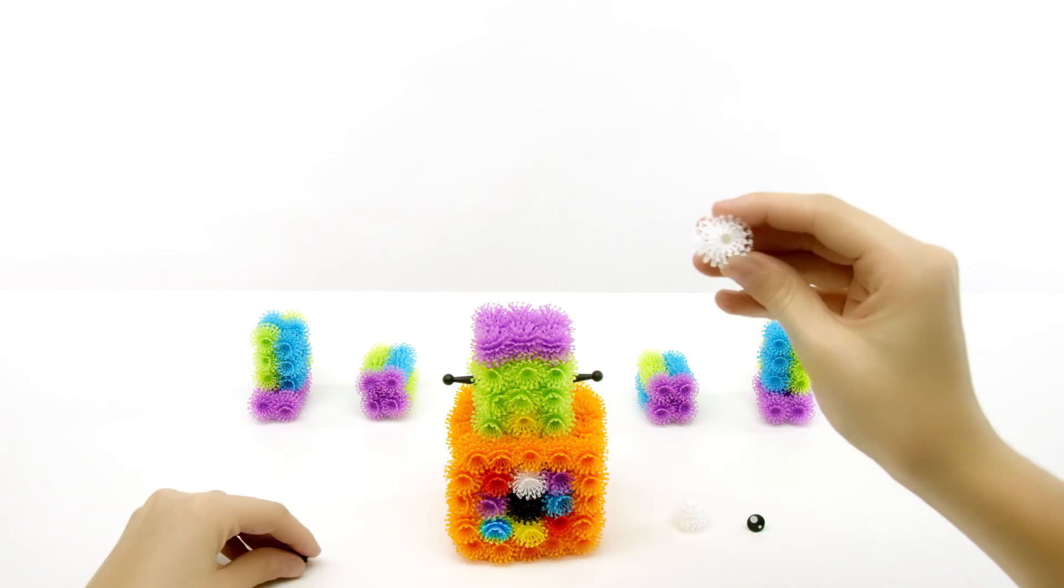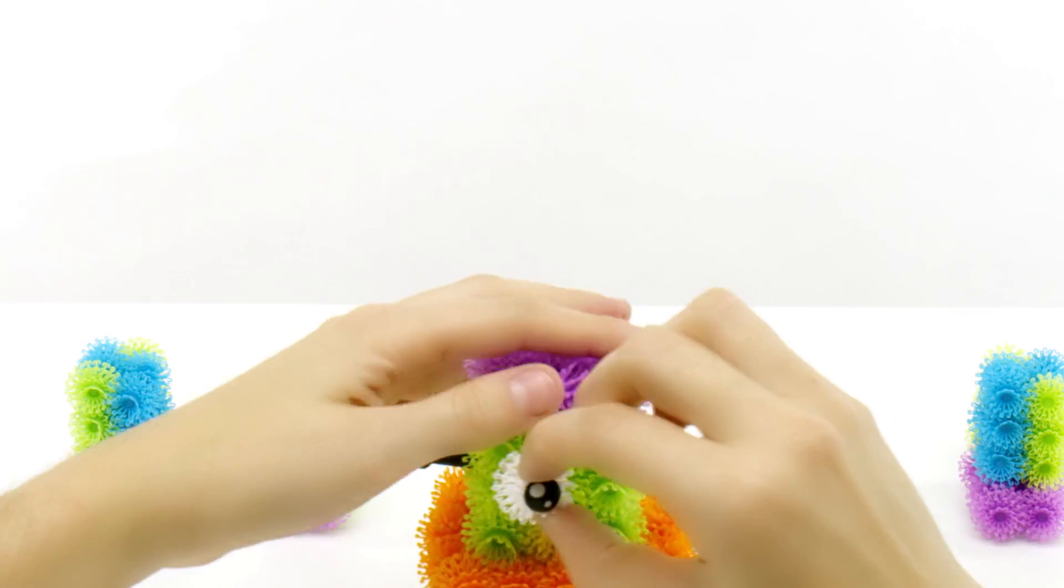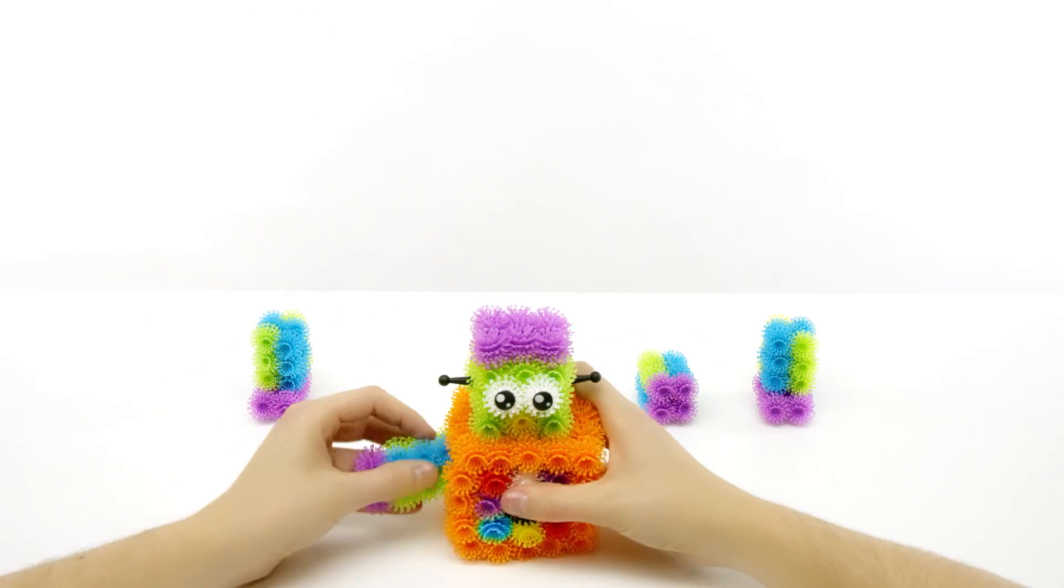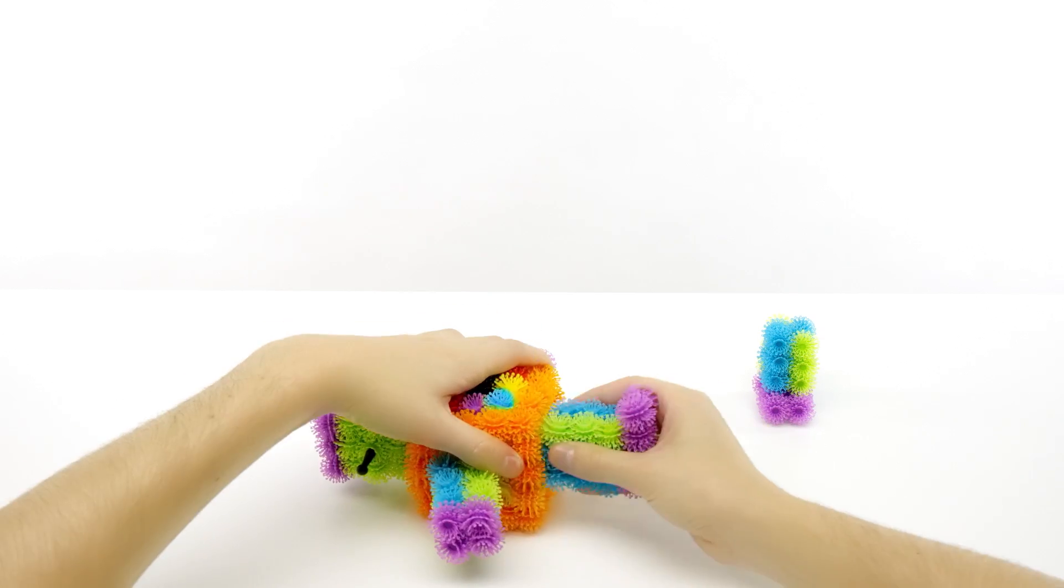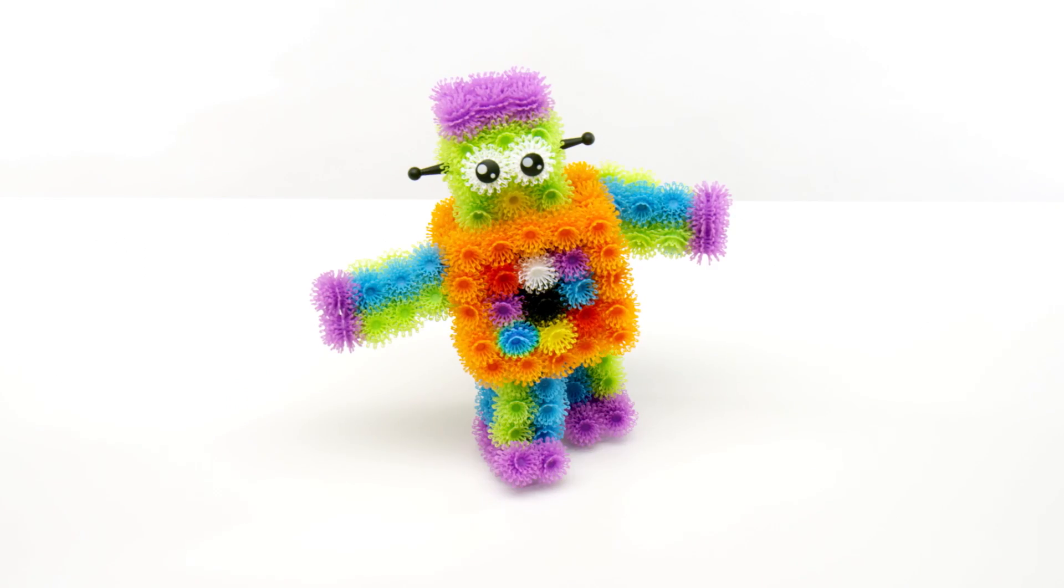Take two white Bunchems and insert the eye accessories into the holes. Attach the arms and then the legs. Stand them up and you're done.